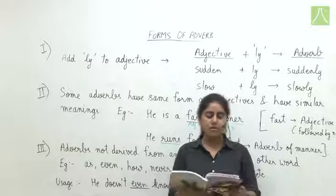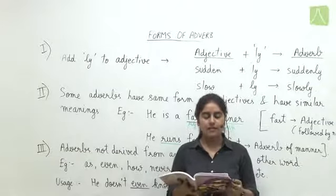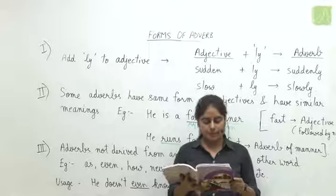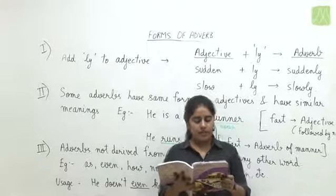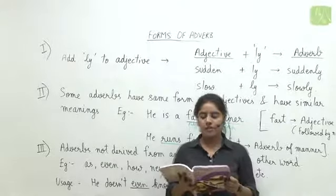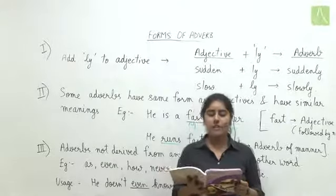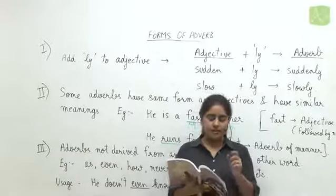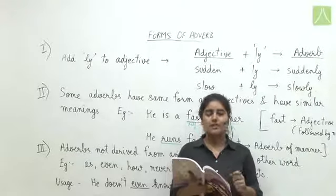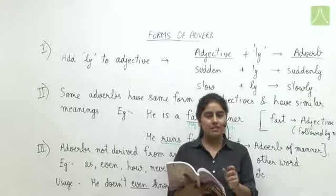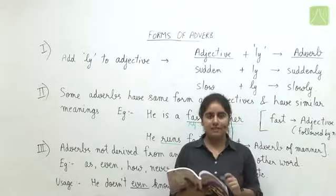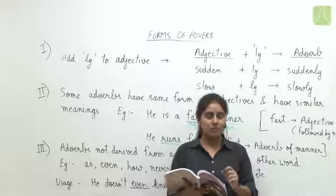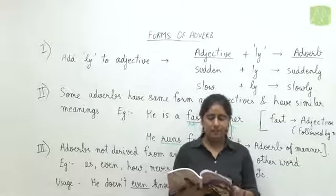Let's come to the module exercises — exercise number one, multiple choice questions. Question number one: 'Mr. Wilson searched everywhere for his briefcase.' Identify the type of adverb of the highlighted word. 'Everywhere' is telling us about place, so option B — adverb of place — is correct.